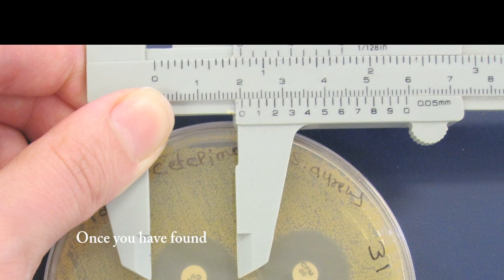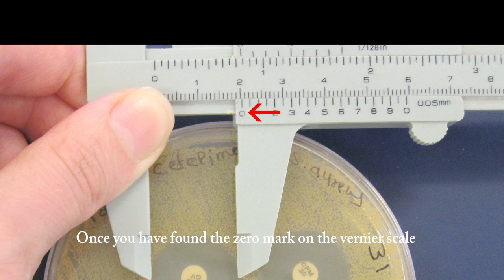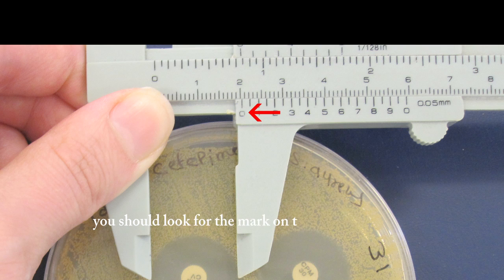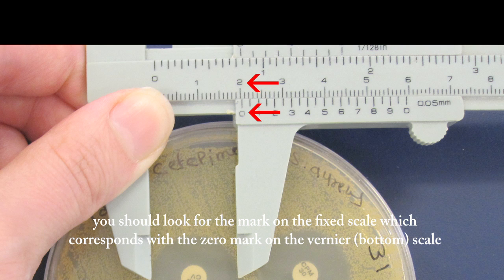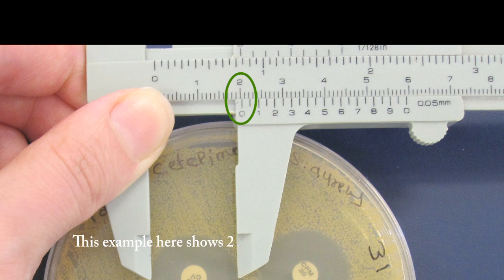Once you have found the zero mark on the vernier scale, you should look for the mark on the fixed scale which corresponds with the zero mark on the vernier bottom scale. This example here shows 2cm, that is equal to 20mm.